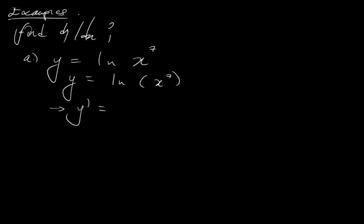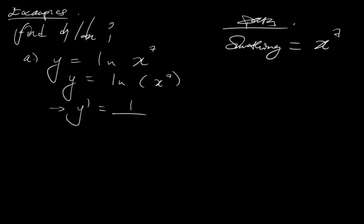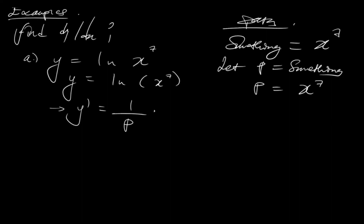What we'll do is let p equal to something. Therefore p is x⁷. So it's going to be 1 over something — something here is p — times the derivative of something, which is the derivative of p, which is going to be p'. So now let's find p'. Let's differentiate p with respect to x using the power rule. The power multiplies the coefficient of x, which in this case is 1. So 7 multiplies 1, and the power of 7 is reduced by 1.